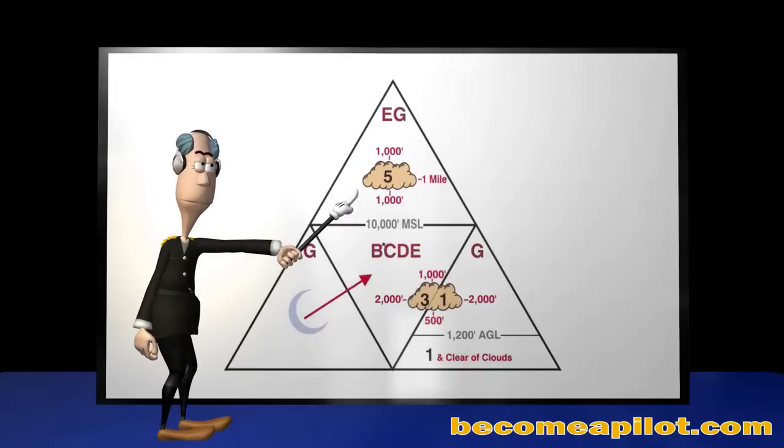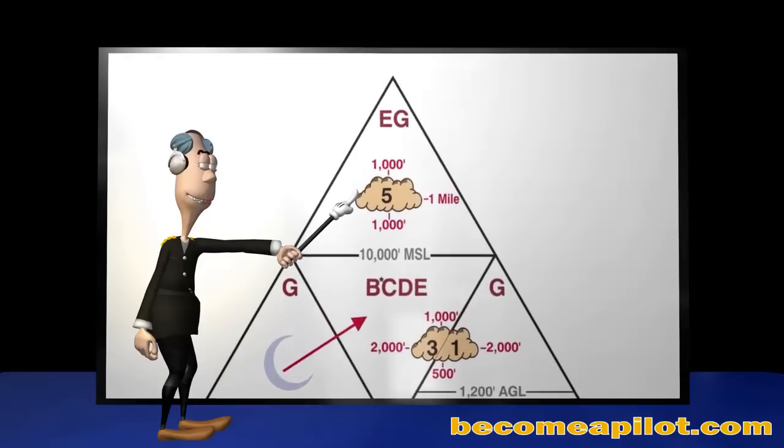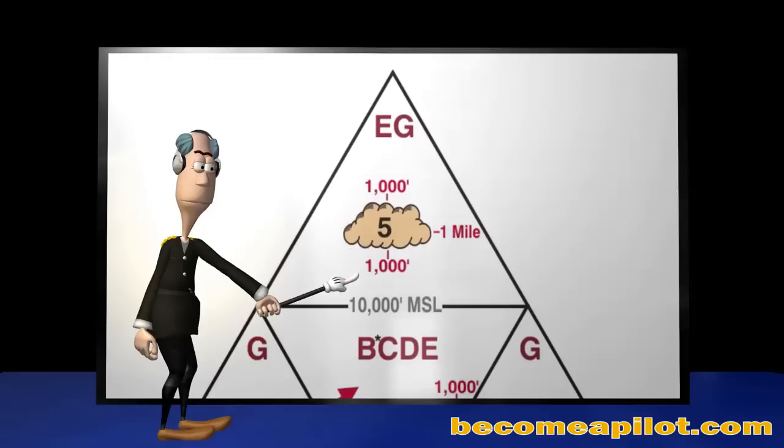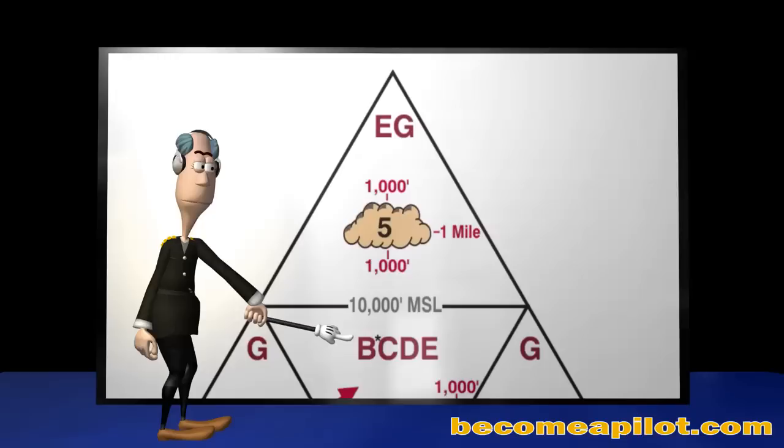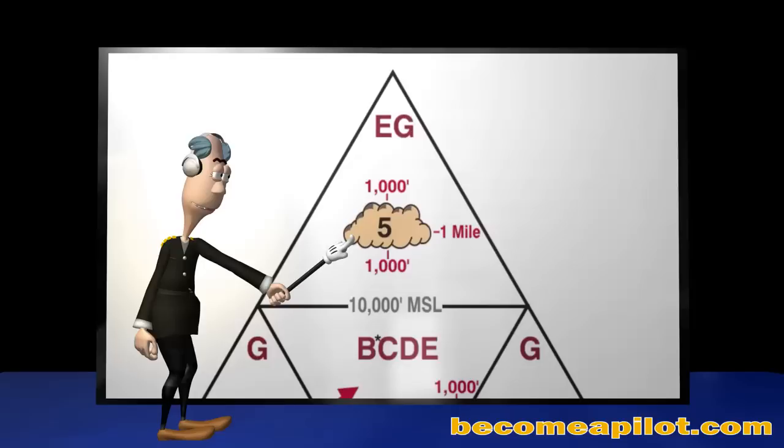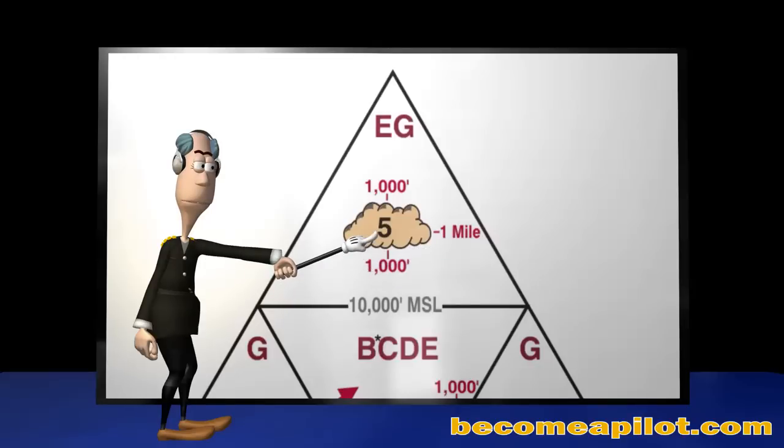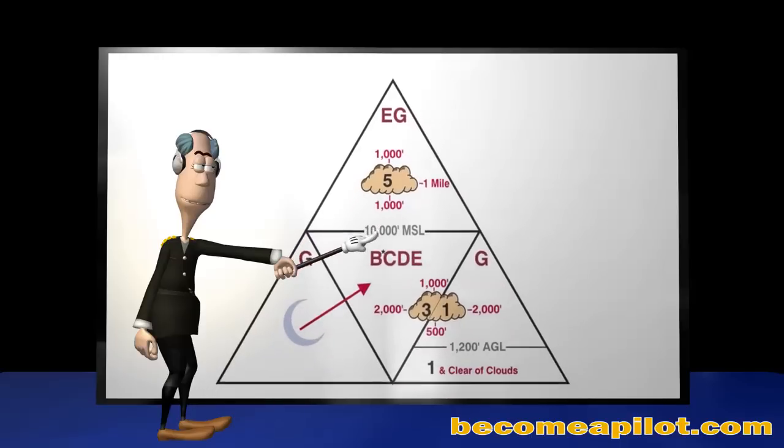The top pyramid and its contents represent the VFR minimums for Class E or G airspace at and above 10,000 feet MSL, extending up to but not including 18,000 feet MSL. And other classes of airspace such as Class B don't usually extend above 10,000 feet MSL. The cloud within this triangle identifies a cloud clearance requirement of 1,000 feet above, one statute mile to the side, and 1,000 feet below. The number five is the required flight visibility in statute miles.